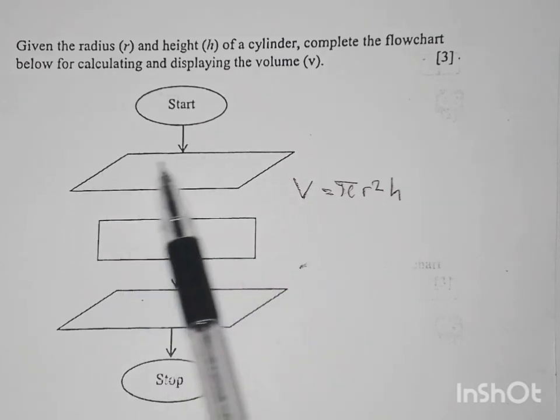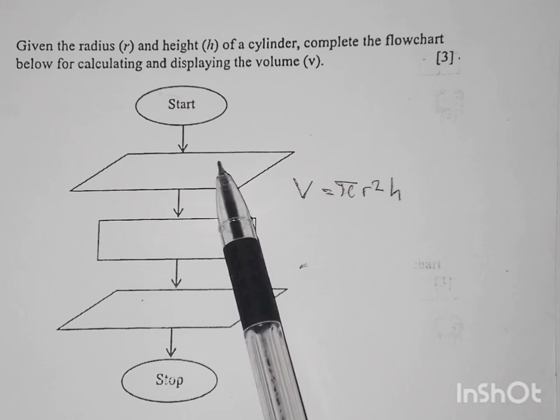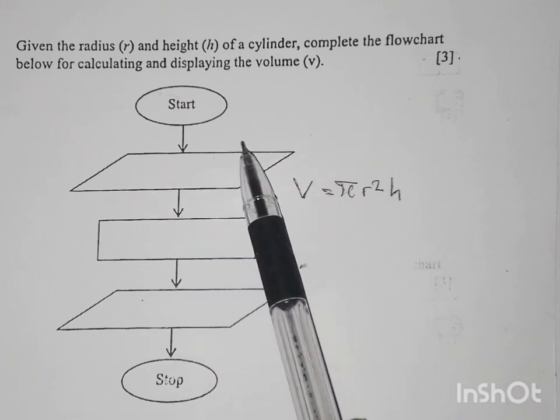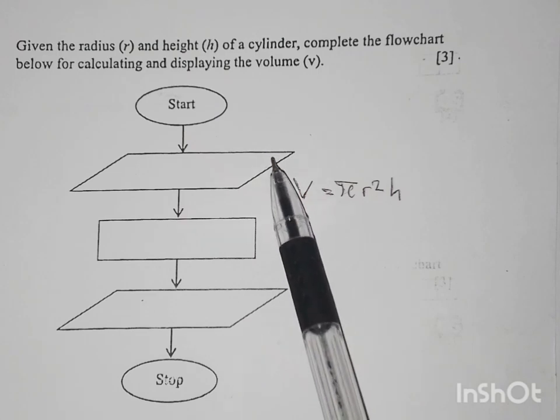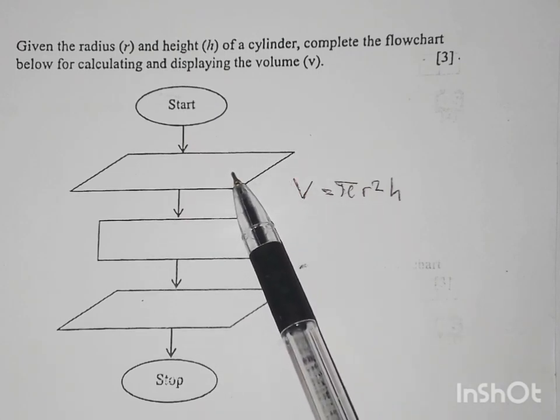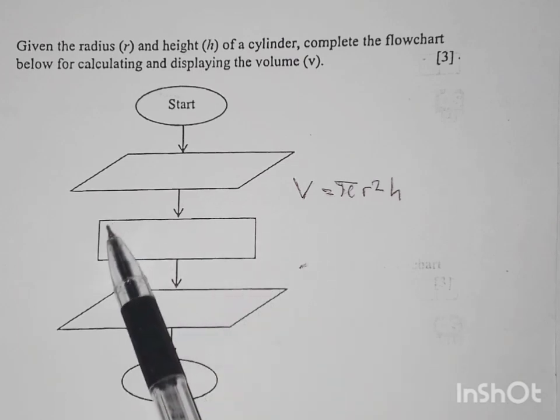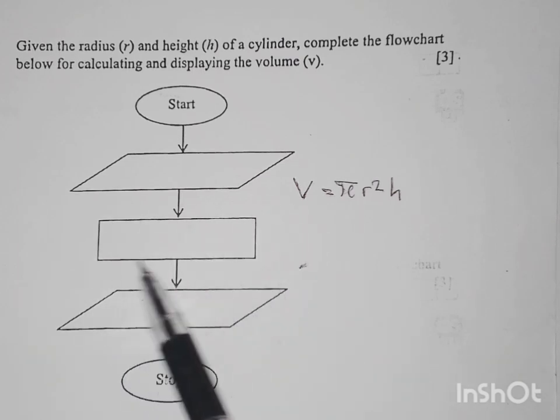Okay, so the first one is for input, then the second one will be for output. Then the rectangle has only one function which is the process or we call it the action stage.